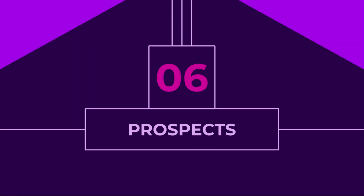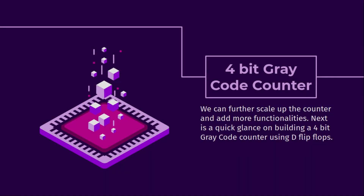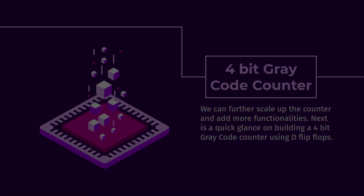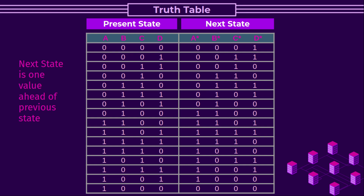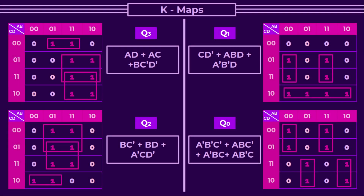In this subsection, we will see other prospects of the gray code synchronous counter. We can further scale up the counter and add more functionalities. Next is a quick glance on building a 4-bit gray code counter using D flip-flops. Here is the truth table for present and next state. We will then use present state values to get the expression of next state values with the help of k-maps, filling them with zeros and ones corresponding to the next state.